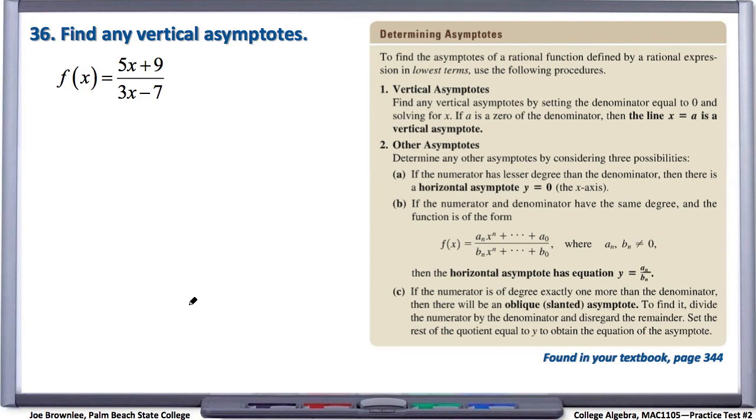Number 36, find any vertical asymptotes. We've been given the function f of x equals 5x plus 9 over 3x minus 7.